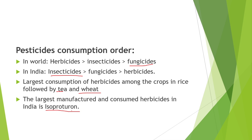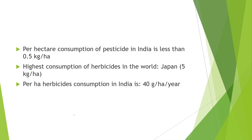The per hectare consumption of pesticide in India is less than 0.5 kg per hectare, but it is highest in Japan at 5 kg per hectare. Per hectare herbicide consumption in India is 40 grams per hectare per year.